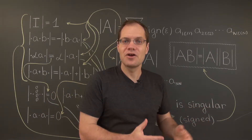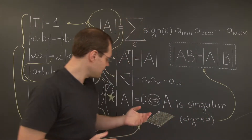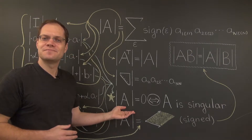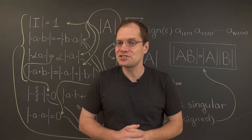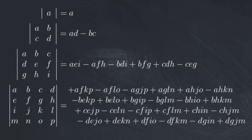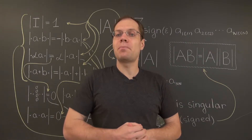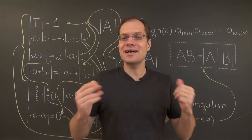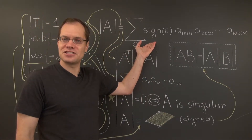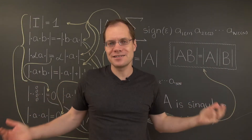Until now, we've been deriving the expressions for determinants of small matrices based on this property right here. And here are the expressions we came up with: the 1x1, the 2x2, the 3x3, and the 4x4 determinants. Based on these expressions, we're going to postulate — or guess, if you will — this algebraic definition. And then we'll go from this definition to the properties of the determinant.